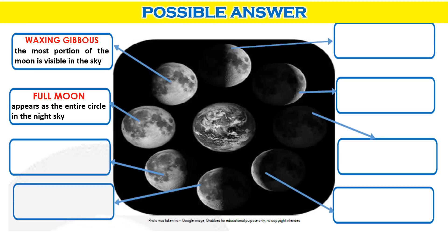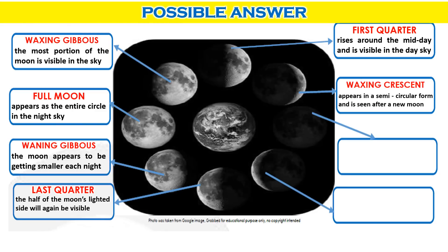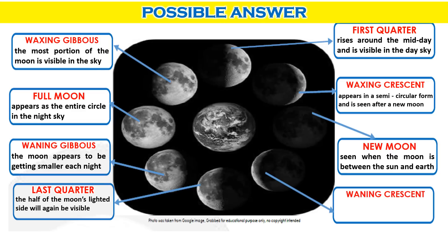Night sky recap. Waning gibbous — the moon appears to be getting smaller each night. Last quarter — half of the moon's lighted side will again be visible. First quarter — rises around midday and is visible in the day sky. Waxing crescent — appears in a semicircular form and is seen after a new moon. New moon — seen when the moon is between the sun and Earth. Waning crescent — moon is nearing the completion of the cycle.